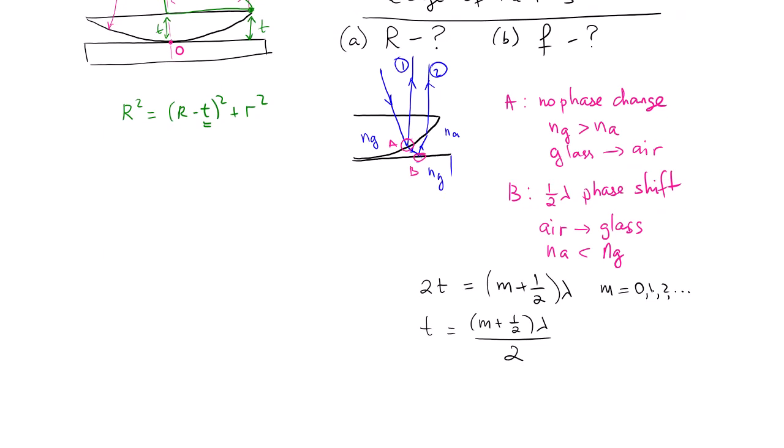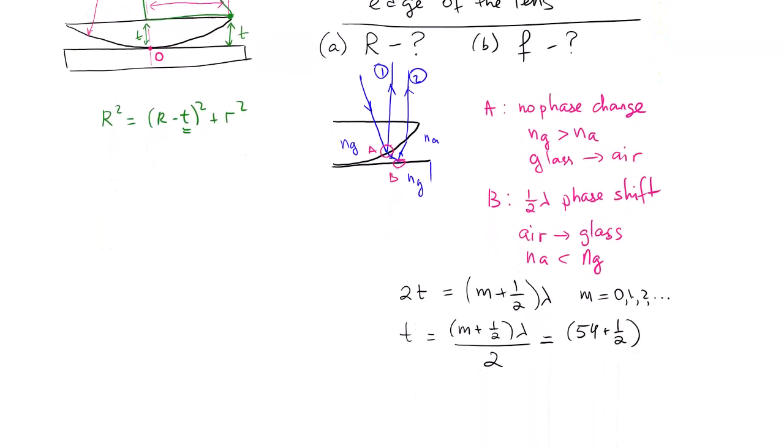Now let's plug in our values. We will have 54 plus one half times the lambda, which we had equals 650 nanometers, 650 nanometers. I'm going to leave my answer in nanometers. Divided by two equals 17.7 micrometers.